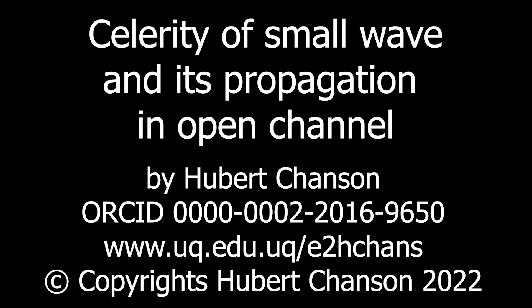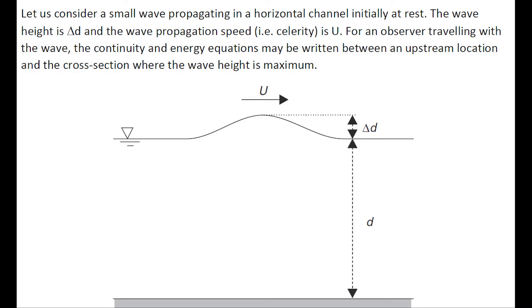Let us consider a small wave propagating in a horizontal channel initially at rest. The wave height is delta d, and the propagation speed is u. For an observer traveling with the wave, the continuity and energy equations may be written between an upstream location and the cross-section where the wave height is maximum.